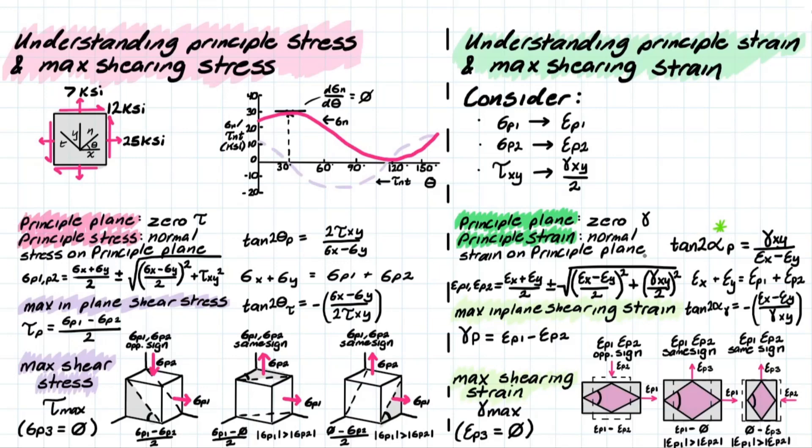So what does this mean? We have principal strains that are acting normal to the principal planes that we are solving for. Similarly, we have equations where we can determine these values of the strains acting on these principal planes. So once again, εP1 or normal strain P1 and P2 representing the X and the Y respectively. And then we share the similar relationship where we have the cumulative addition of both strains is going to equal to the cumulative addition of the principal strains.